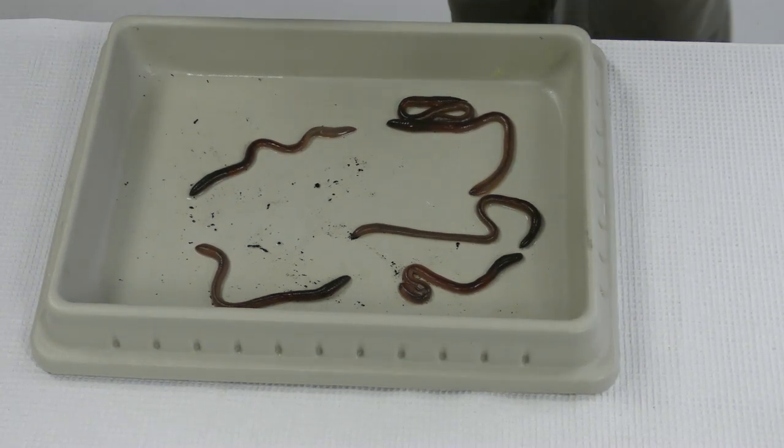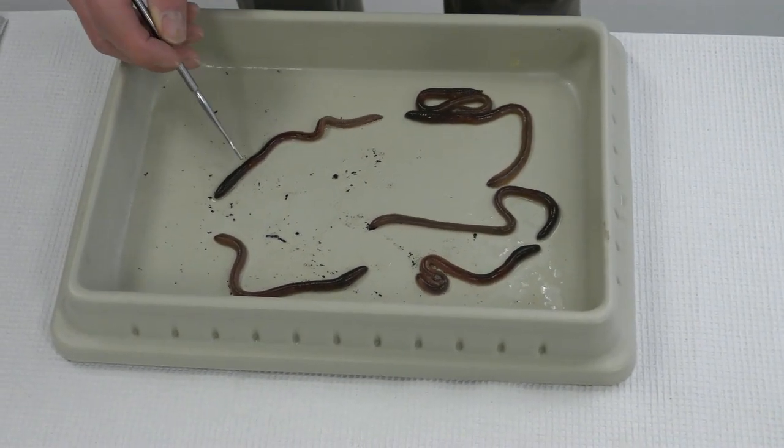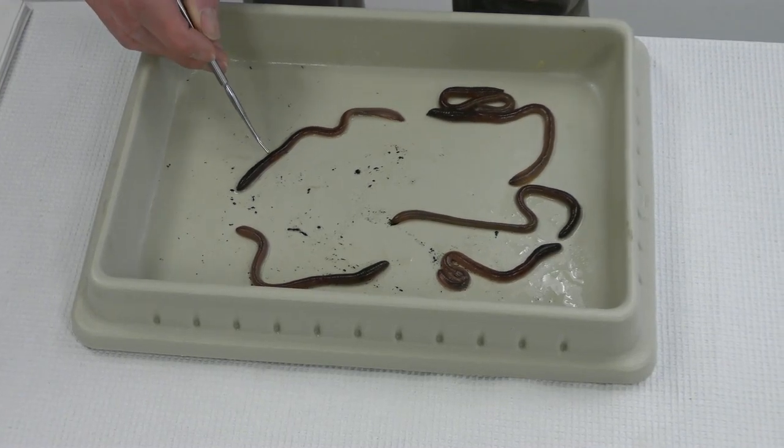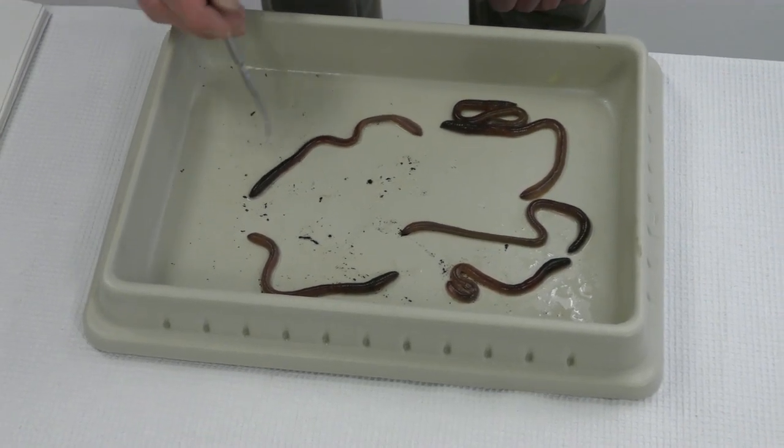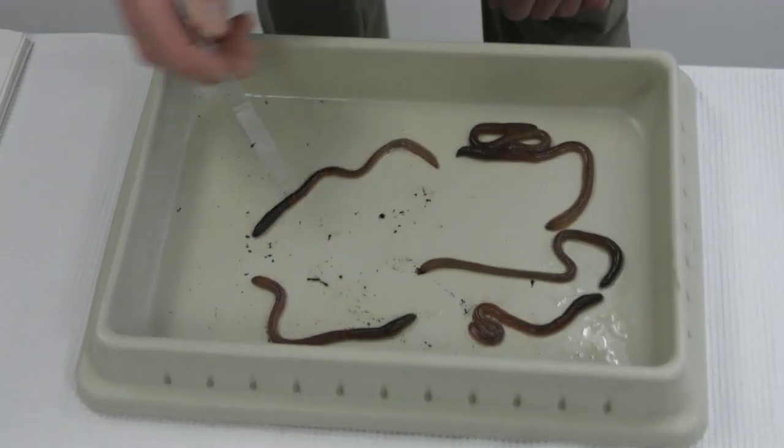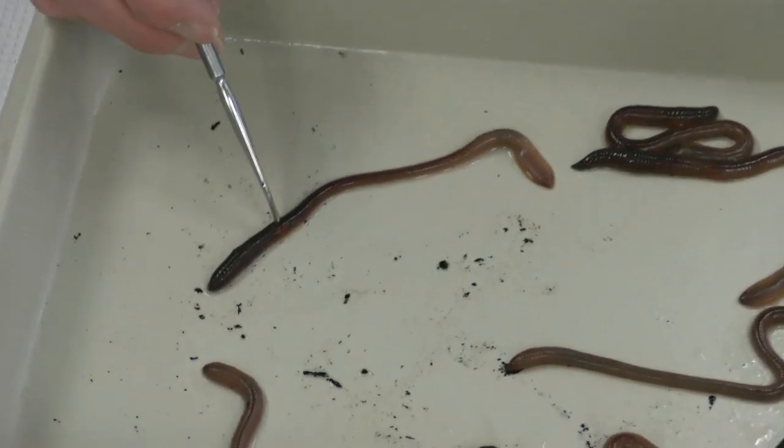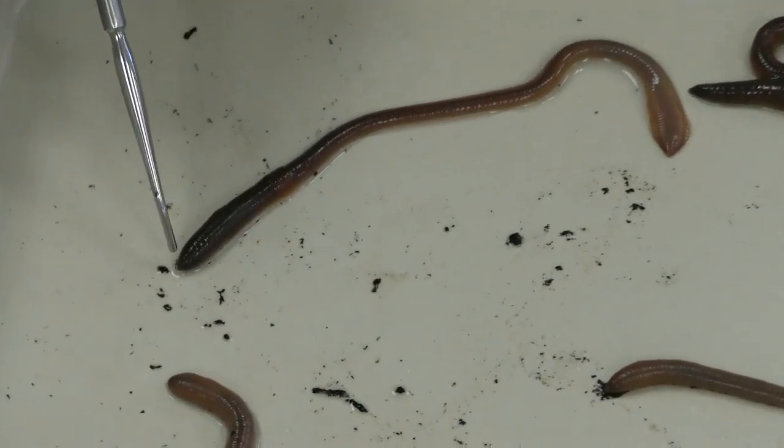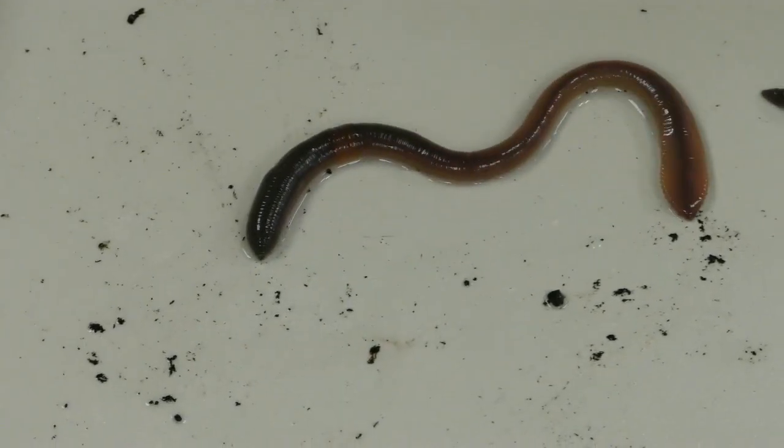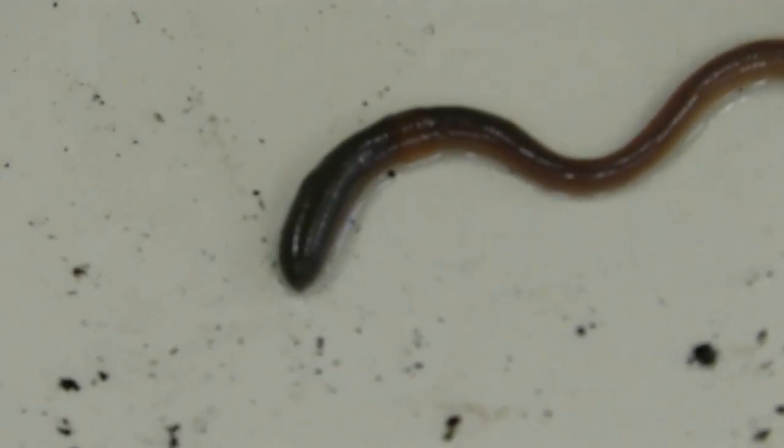The other important thing to note here, you might want to look at the diagram as well. If you want to know the anterior and posterior of a worm, this is a little swollen-like structure here called a band, the clitellum. And that's always going to be closest to the anterior or the mouth region.